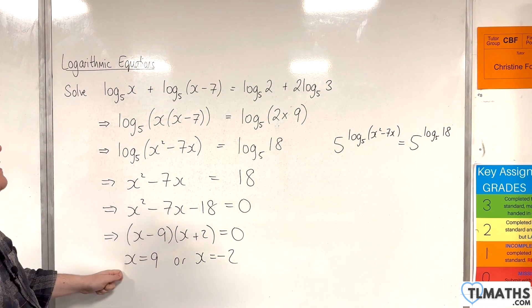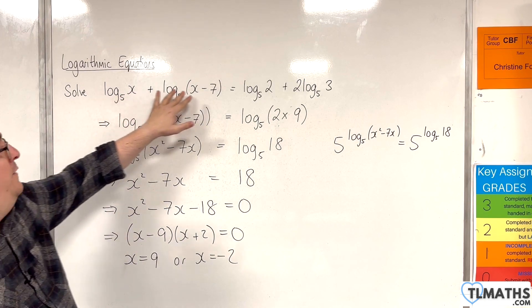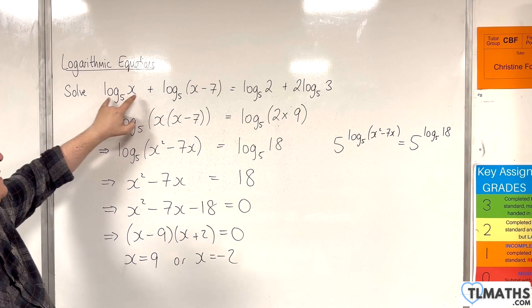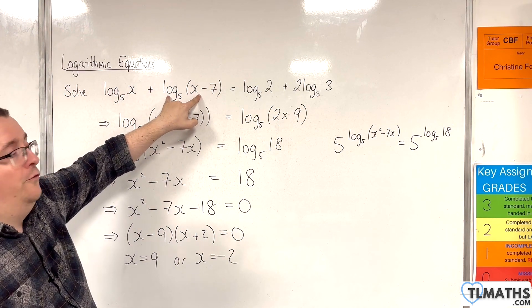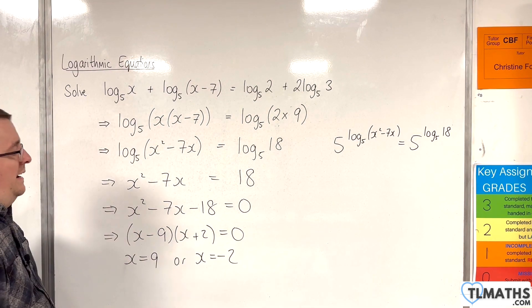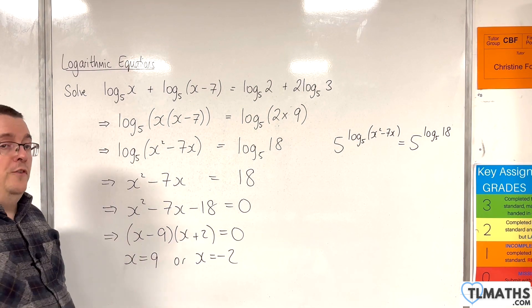Now x equals 9 is perfectly fine. If you substitute x is 9 into this, you'd have log base 5 of 9 plus log base 5 of (9 - 7), so log base 5 of 2, and it all works neatly. So x equals 9 is fine.